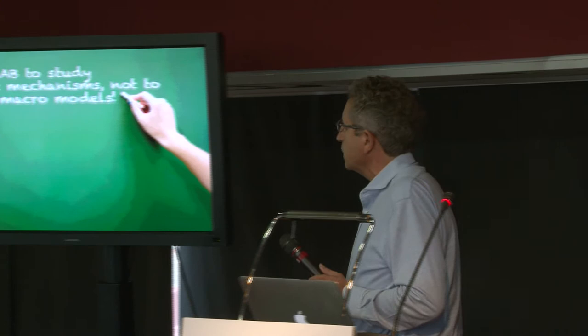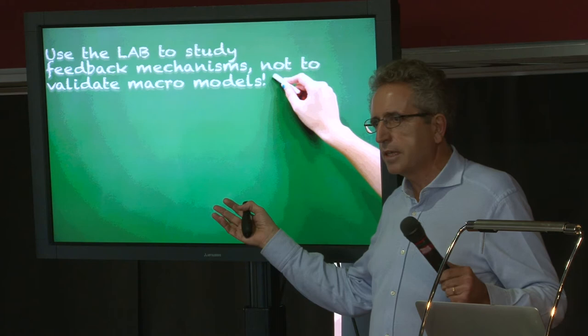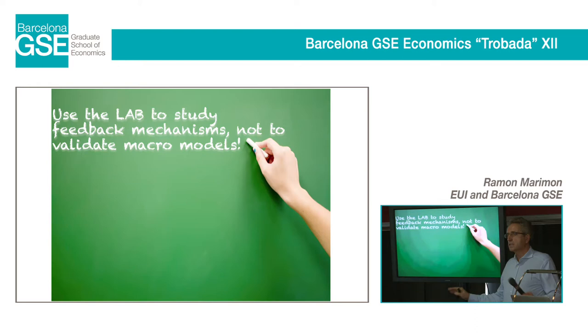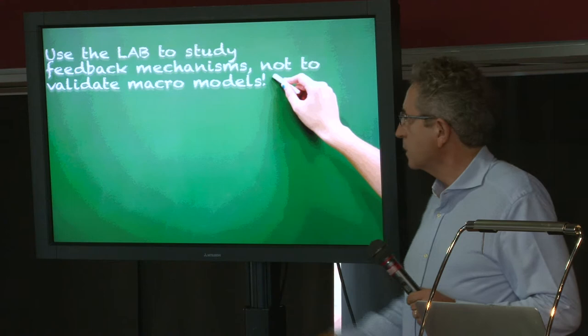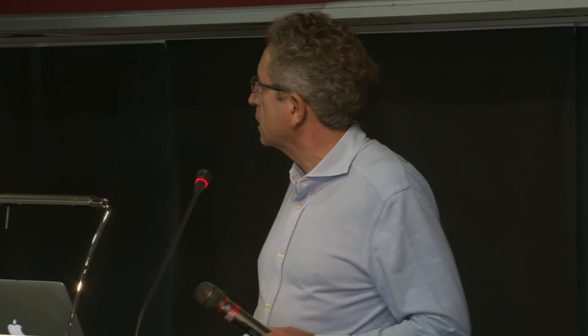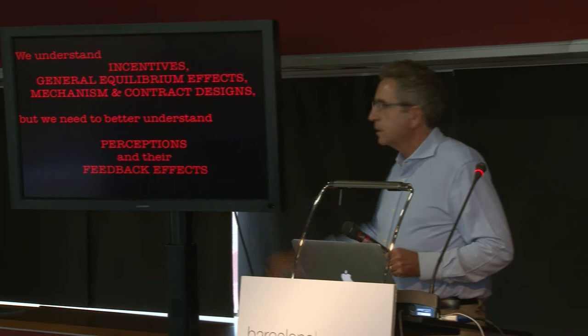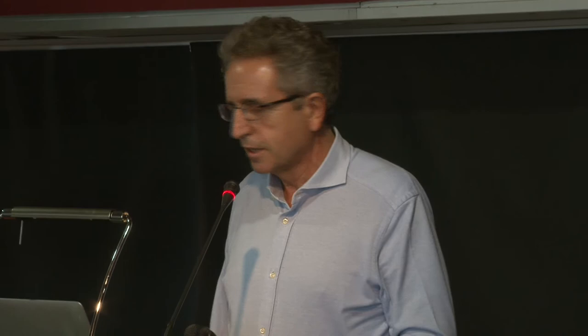We understand incentives, general mechanisms, and contract design. What we need to better understand is perceptions and feedback effects, and the lab can help with that — in macro and in real life. In summary, we need to understand more about how people perceive the world and how those perceptions feed back into outcomes. Thank you.